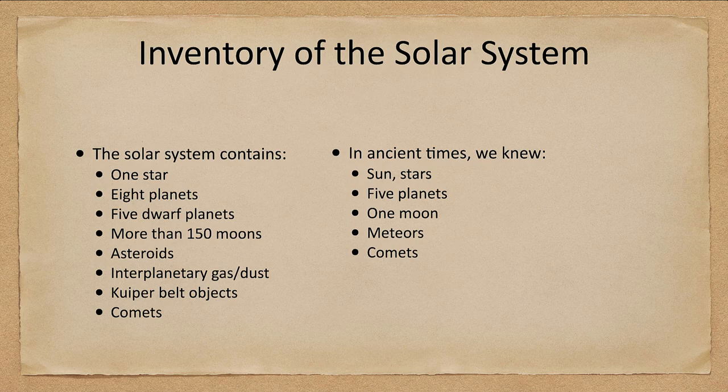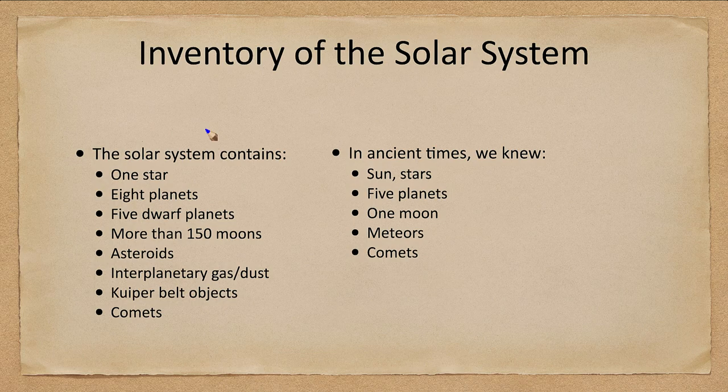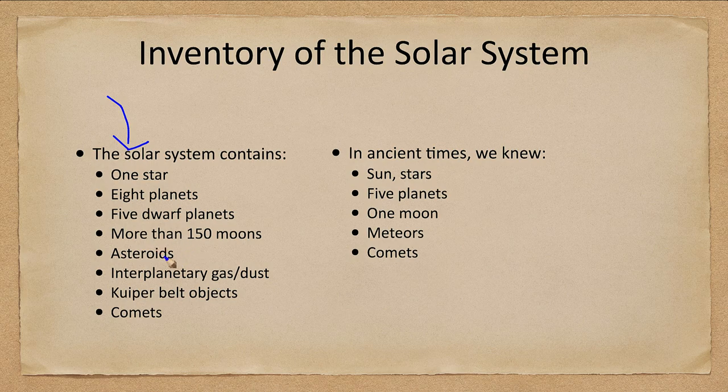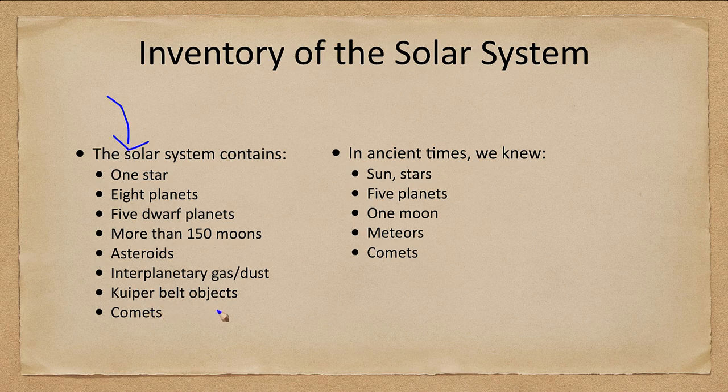So what do we find in the solar system? Well it changes depending on the time. Right now we know that there are these things in the solar system: one star, eight planets, five dwarf planets, more than 150 moons, plus asteroids, interplanetary gas and dust, the Kuiper Belt objects, and the comets.